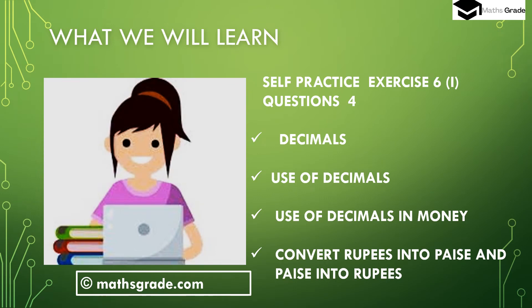Today we will learn and solve self-practice exercise questions 124, self-practice 6i. The chapter name is Decimals and the topics are: use of decimals, use of decimals in money, converting rupees into paise, and paise into rupees. Let's solve some questions.